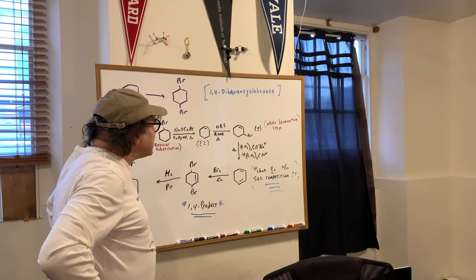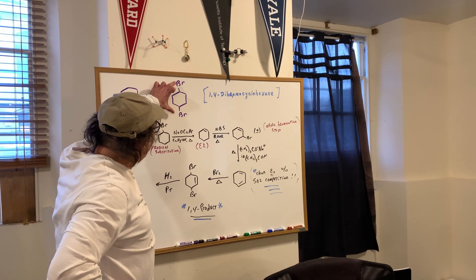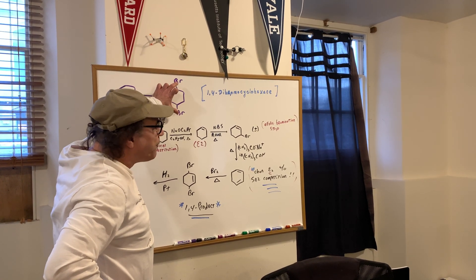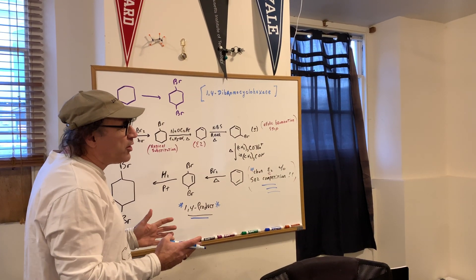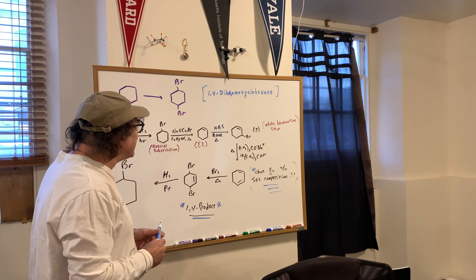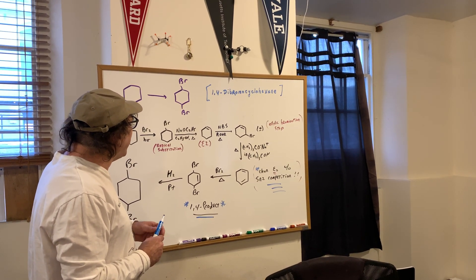Now, this is where it gets to be a thinking man's game. If you notice that these bromines are in the 1,4 position, normally when you put on bromines, they come in the 1,2 position. So the question is, how am I going to get a 1,4 bromination?